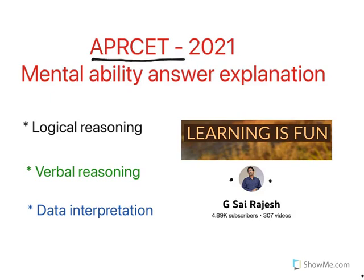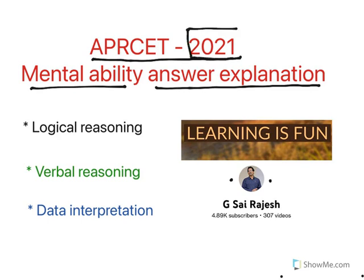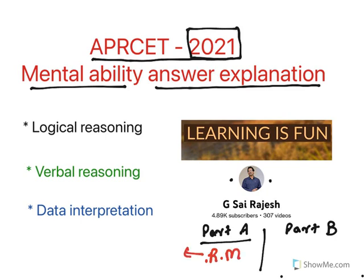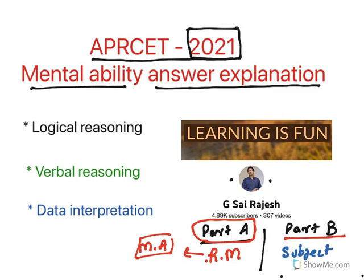Hello everyone, welcome to the video on APRZ 2021 Mental Ability Question Answer Explanation. In this video I will explain APRZ 2021 paper Mental Ability Questions. In APRZ there are two different parts: Part A and Part B. Part A includes Research Methodology, and there are at least 10 Mental Ability Questions. Part A is common to all subjects and papers, whereas Part B is related to a particular subject. These Mental Ability Questions are also useful for AP SET.